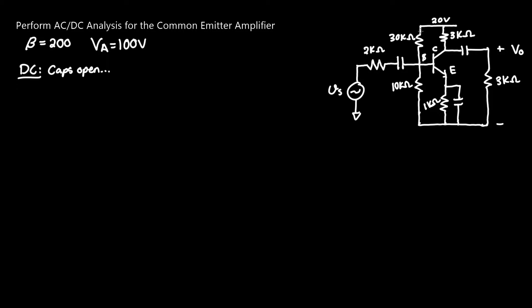Looking at what we have before the base, there is a 10 kΩ resistor and a 30 kΩ resistor. Unlike the previous video, we now have two resistors for biasing, which will change the process and make it slightly longer.